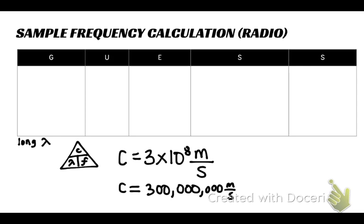So we're going to use this triangle where C equals wavelength times frequency. Wavelength and frequency should be familiar variables for you.